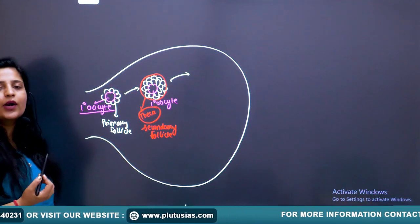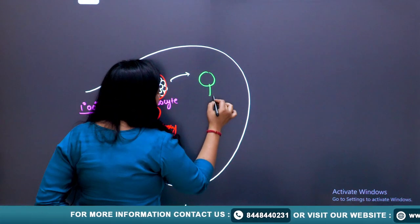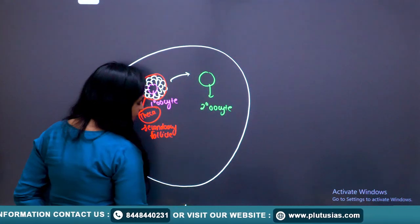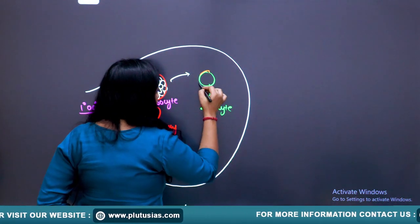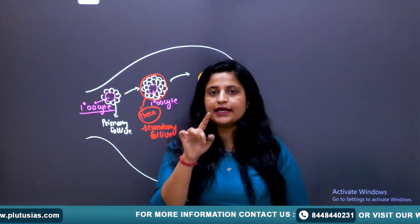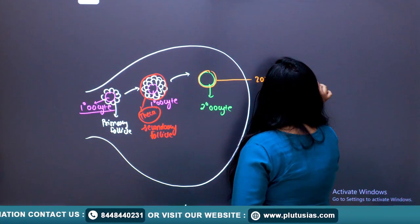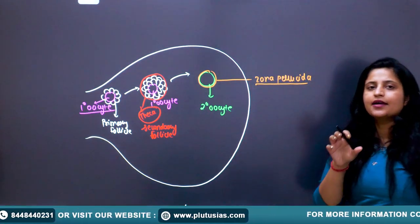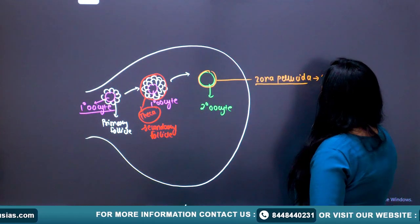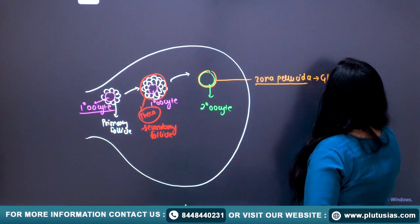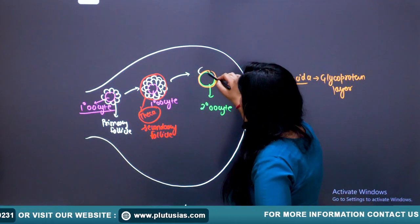The secondary follicle converts into the tertiary follicle. The primary oocyte converts into the secondary oocyte. The secondary oocyte releases a layer outside itself known as the Zona Pellucida — a glycoprotein layer, meaning it is made up of carbohydrates and proteins.